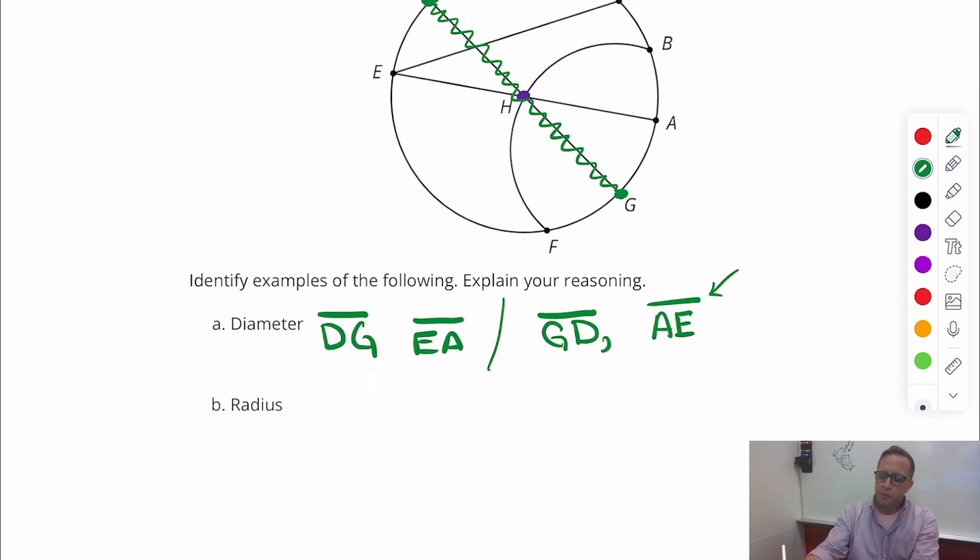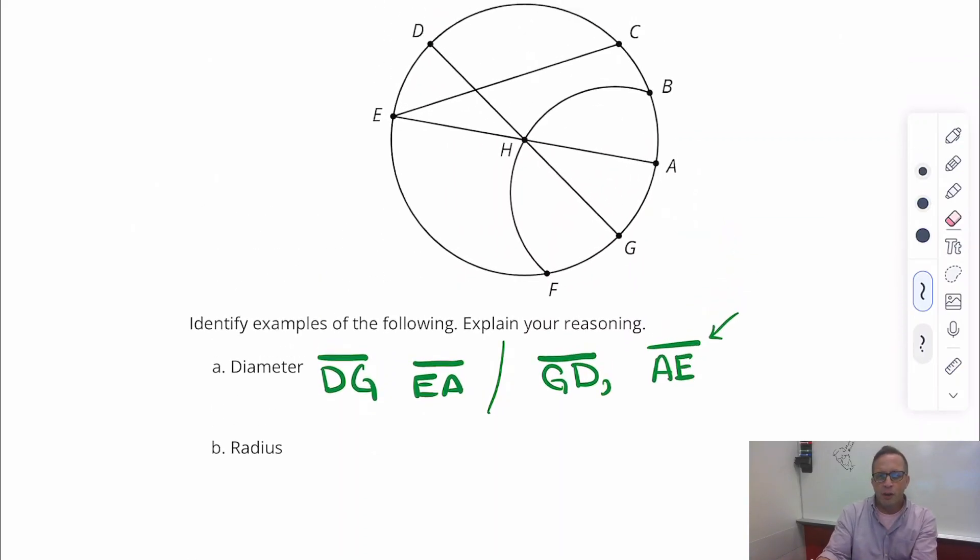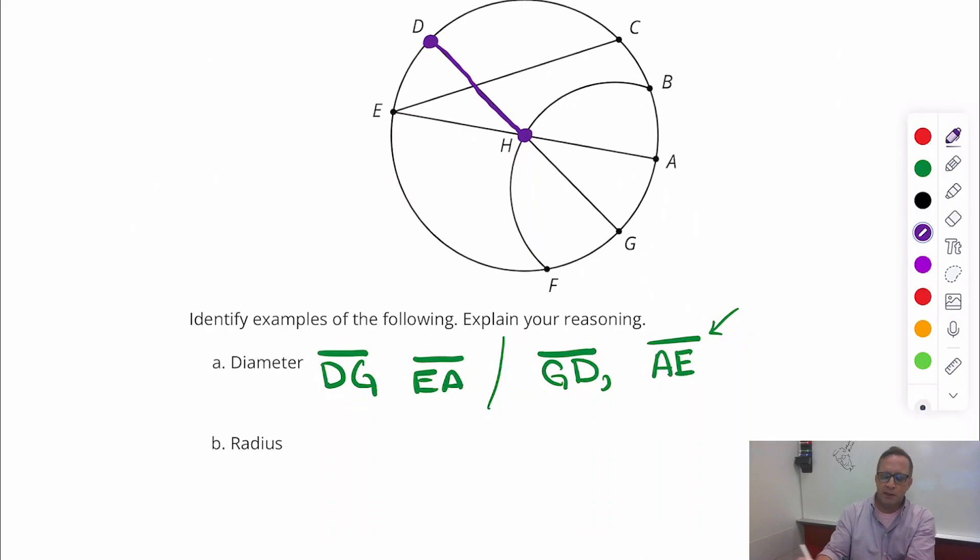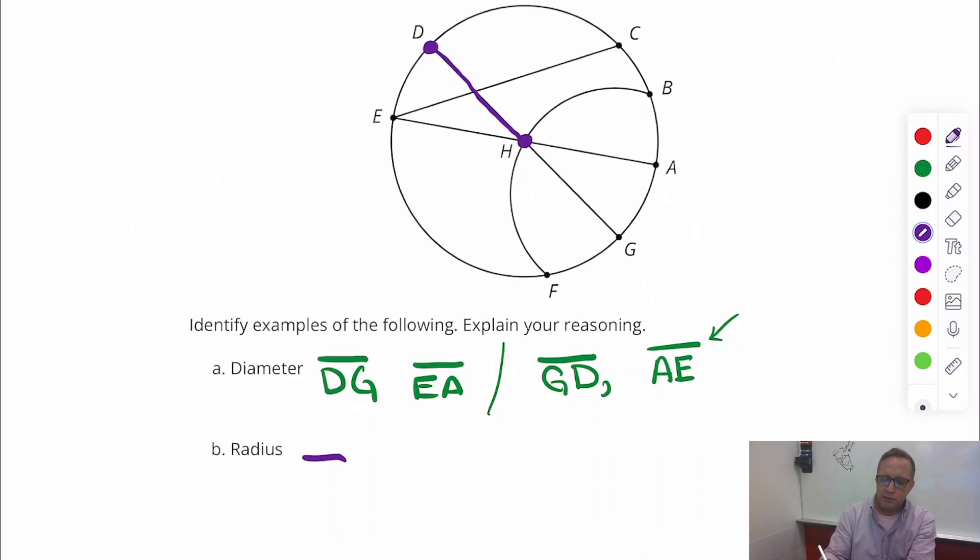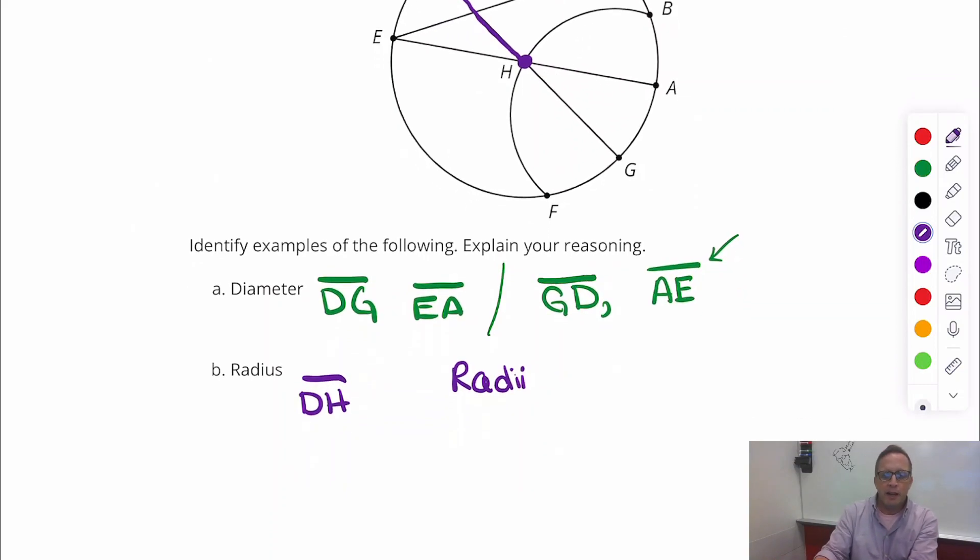The radius. Radius is, you want the endpoint to be on the circle and you want it to stop at the midpoint, at the center. So right there, that's a radius, DH. There's a bunch of radii here. DH. You know, the plural for radius, you don't say radiuses. Even though as a middle schooler I know what you're talking about, the plural for radius is radii, like cacti. But radii.